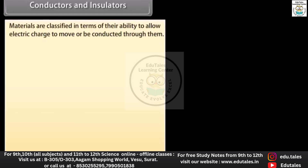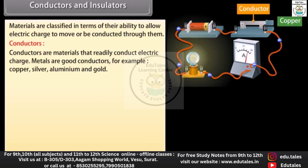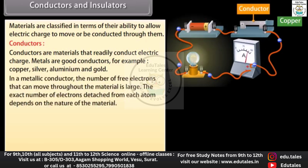Conductors and insulators: materials are classified in terms of their ability to allow electric charge to move or be conducted through them. Conductors are materials that readily conduct electric charge. Metals are good conductors — for example, copper, silver, aluminum, and gold. In a metallic conductor, the number of free electrons that can move throughout the material is large.